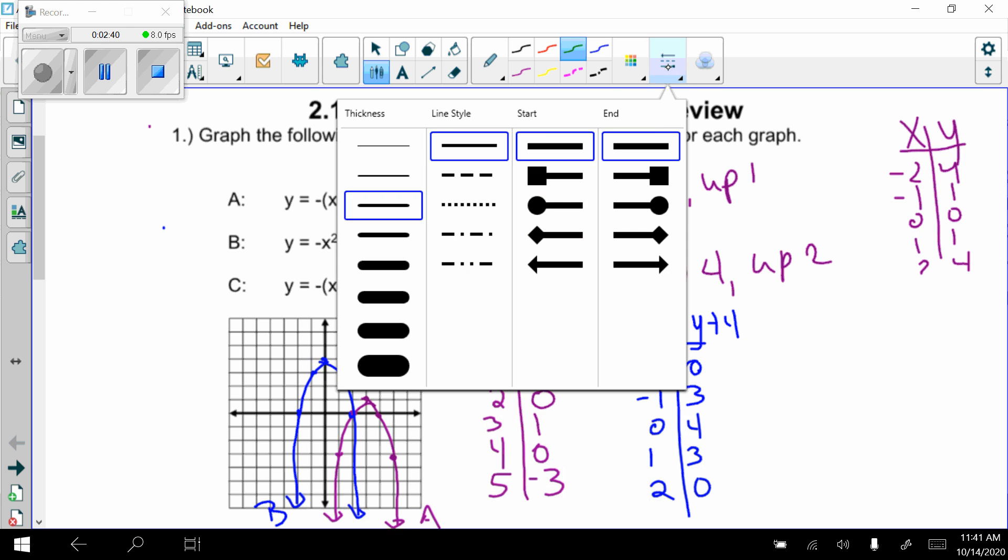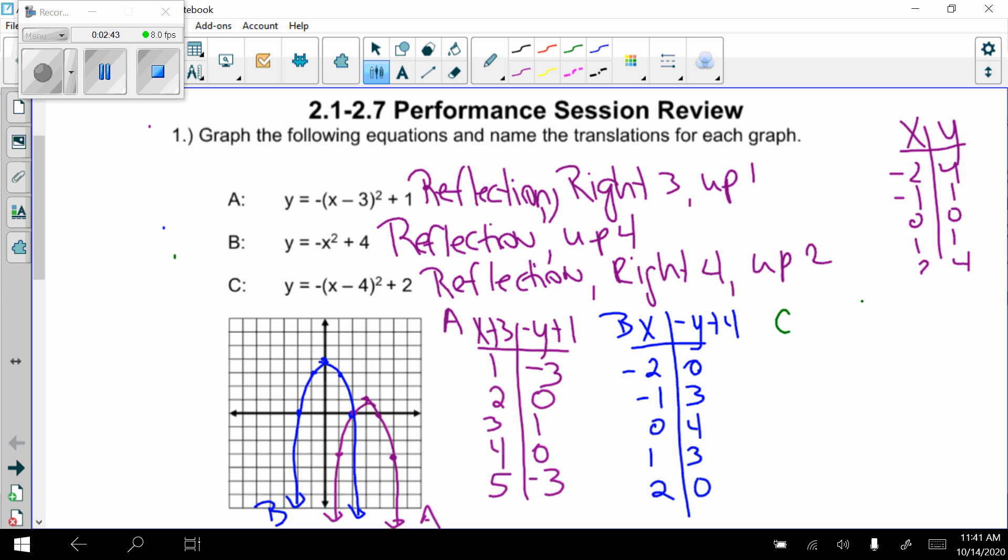Switch colors one last time and do parabola C, xy table. So I go to the right 4. So x plus 4, negative. So reflect. So negative y plus 2.